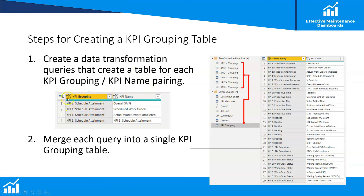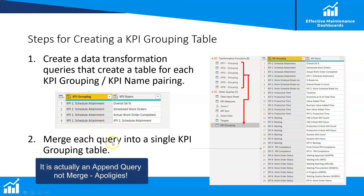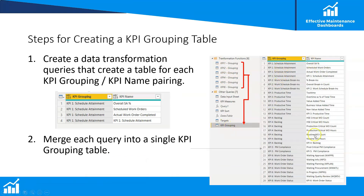To get to this end result we're going to use a merge query feature within Power Query. We're going to pull in a KPI grouping query for each of the different groupings — one for KPI 1, one for KPI 2, one for KPI 3, etc. — and then load and merge each of those into a KPI grouping table. The final result will have the KPI grouping name and each of the KPIs that belong to that grouping, allowing us to create the hierarchy we're looking for.